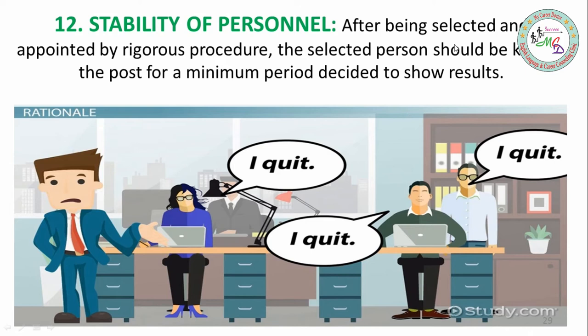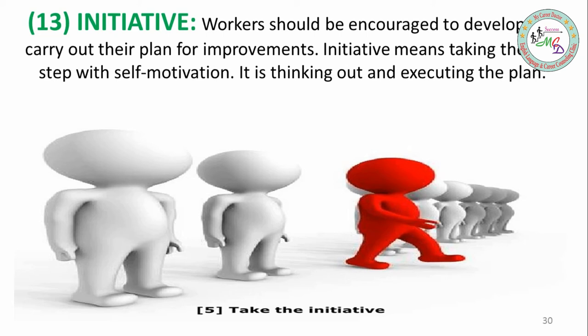Next is Stability of Personnel - after being selected through a rigorous procedure, the selected person should be kept at the post for a minimum decided period to show results. There should not be a high attrition rate; employees should not leave their jobs quickly, as this often results from poor management principles. Next is Initiative - workers should be encouraged by management to develop and carry out plans for improvement so their ideas are heard.